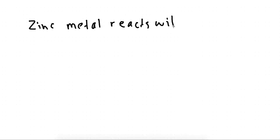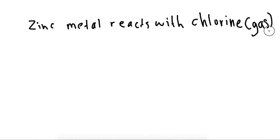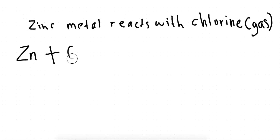Let me give you a simple example. If zinc metal reacts with chlorine — chlorine by itself is always a gas. Zinc metal, we know is a metal, so the symbol is Zn. No plus sign or anything; this is a chemical equation, no charges. Zinc metal reacts, so we put a plus sign. Chlorine gas — all gases are diatomic — so Cl2.